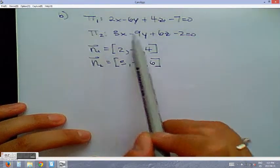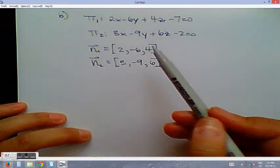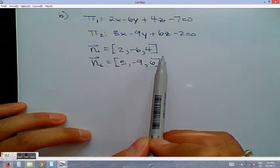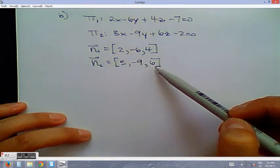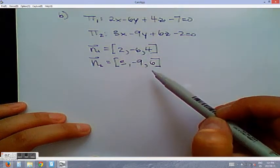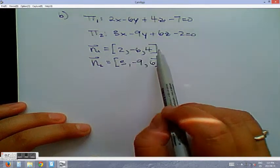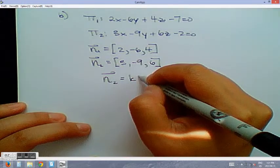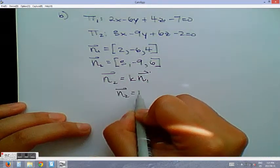Looking at part B, we have two planes. Let's first eliminate the case in which the two planes are parallel by examining their normals. Remember that the coefficients in front of the variables correspond to the coordinates of the normal — this gives us N1 and N2. We check whether there is a number K such that we can multiply N1 to get N2. In this case, if you examine it, there is — N2 is equal to 1.5 times N1.